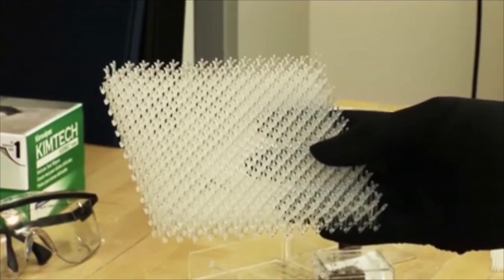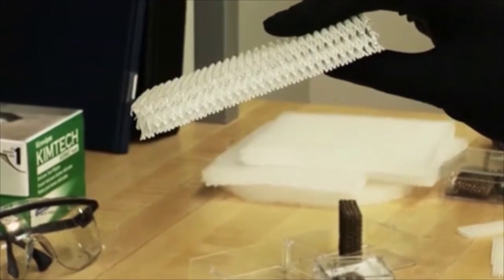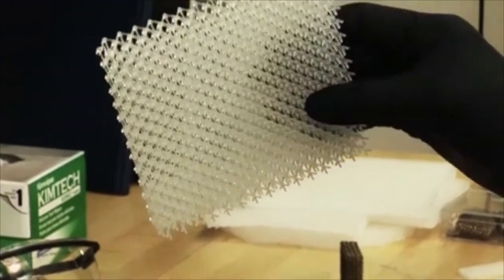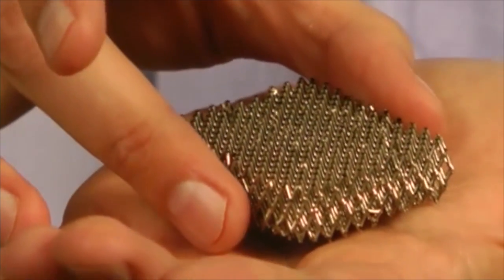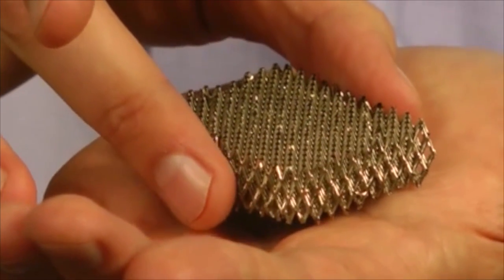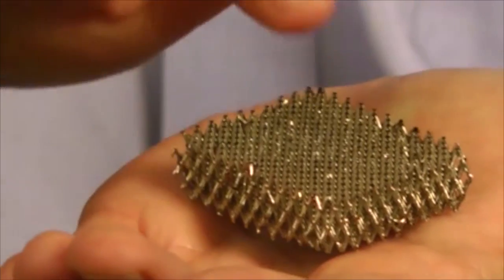The ultra-light metallic micro-lattice is formed from a plastic-like polymer that's coated with a thin metallic layer such as nickel. Once coated, the lattice is dissolved away, leaving a hollow metal that has the properties of nickel but is extraordinarily lightweight.